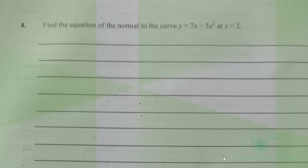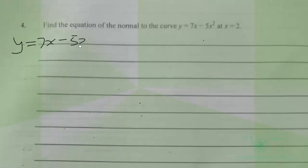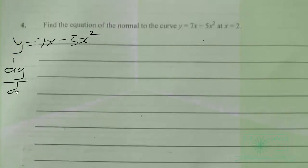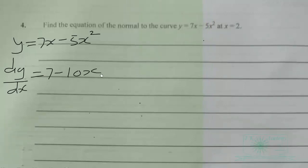First we need to find the gradients, then we need a point. Given y equals 7x minus 5x squared, this is a vertical parabola. So we differentiate: dy/dx gives us 7 minus 10x. This gives us the gradient of the tangent at any point.